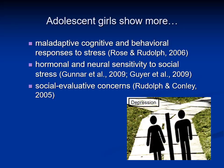In addition to adolescent girls experiencing more interpersonal stress than boys, we also thought they may be more reactive to this stress when it does occur. Adolescent girls show more maladaptive cognitive and behavioral responses to stress, more hormonal and neural sensitivity to social stress, and higher levels of social evaluative concerns — worrying about what other people think of them and how they're being judged. All of these might lead to stronger links between interpersonal stress and depression.